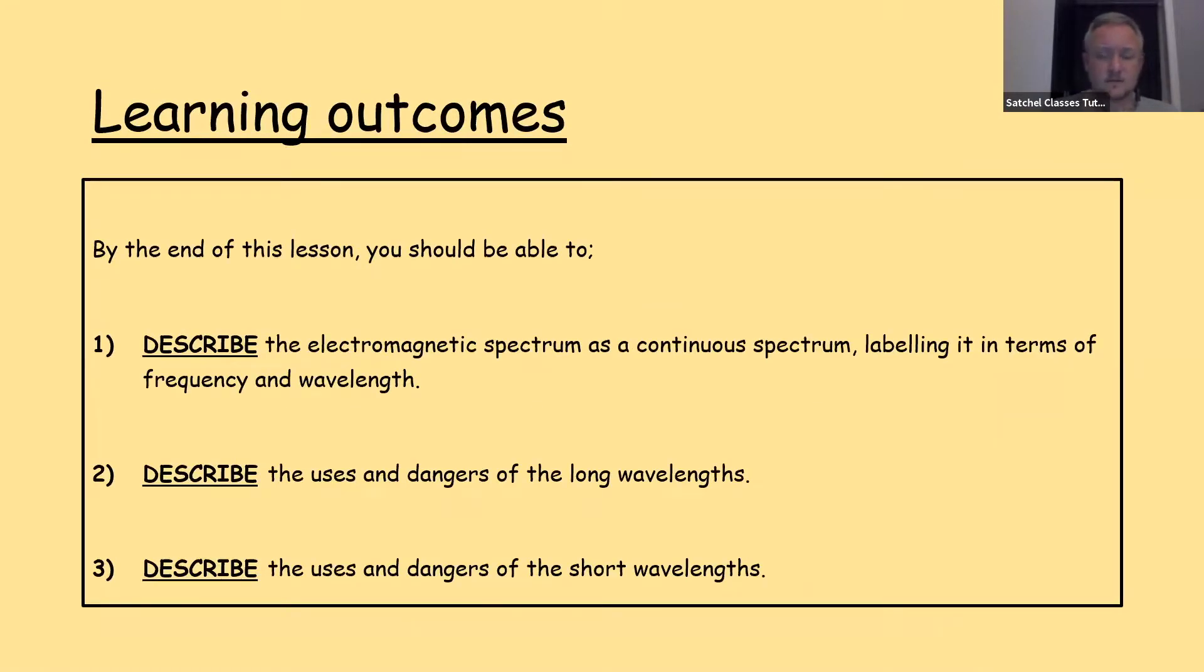By the end of this lesson, hopefully, what you should be able to do is describe the electromagnetic spectrum as a continuous spectrum, labelling it in terms of frequency and wavelength. You should also be able to describe the uses and dangers of the long wavelengths, and finally, the uses and dangers of the short wavelengths. This covers pretty much most of the unit for Key Stage 4 GCSE physics.